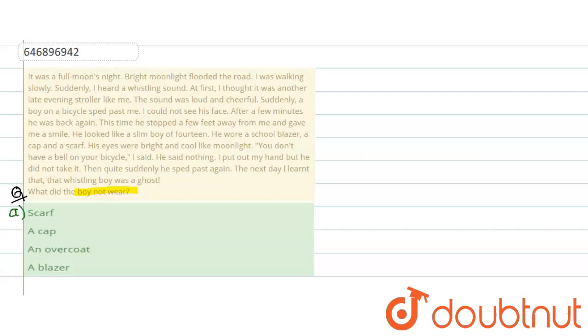First option is scarf. Second option is a cap. Third option is an overcoat. And fourth option is a blazer. So we'll get to know its answer when we will read the passage. So now we'll start reading the passage.